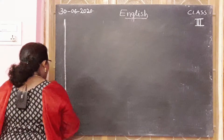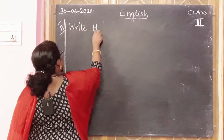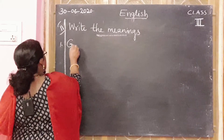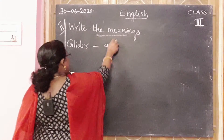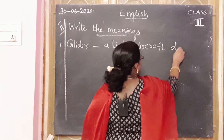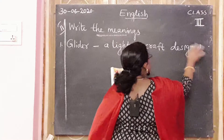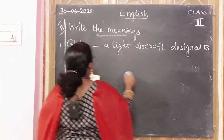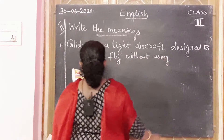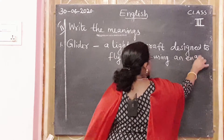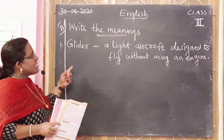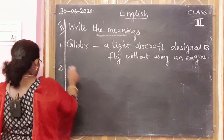Next, write the meanings. First one: glider. Glider means a light aircraft designed to fly without using an engine.